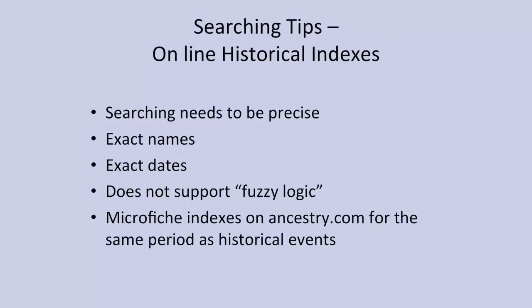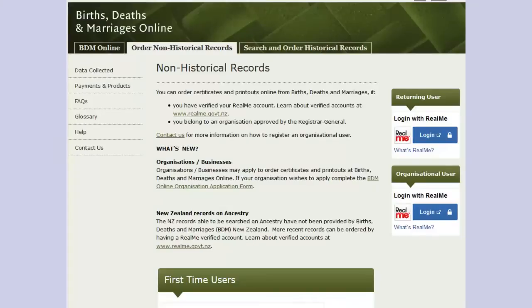Searching tips for online historical indexes: your searching needs to be precise. You need exact names and exact dates — it won't accept just a year. You need to put the start date in the format 01/01/1890 as demonstrated. It doesn't support any sort of fuzzy logic, so you only get back what you put in. The microfiche index on Ancestry.com for the same period does accept some fuzzy logic, so you will often be able to find records there.